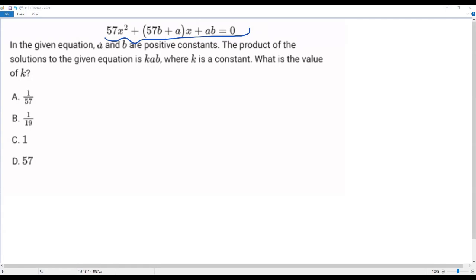In the given equation, a and b are positive constants. The product of the solutions to the given equation is k times ab, where k is a constant. What is the value of k?